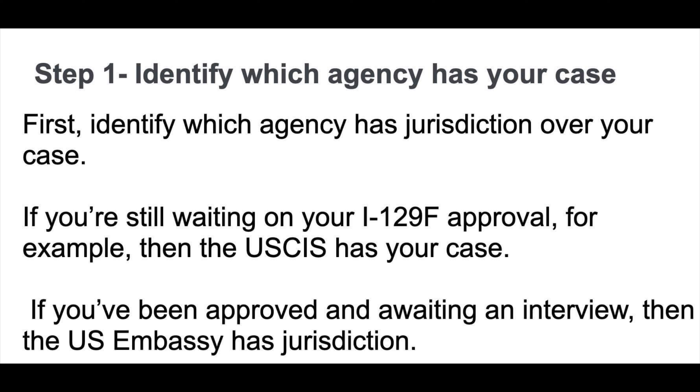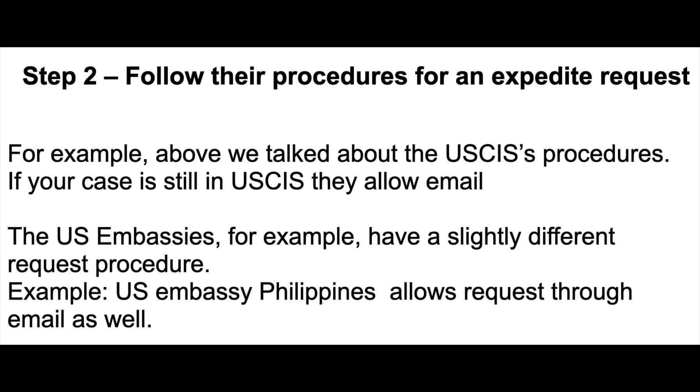Step one: identify which agency has your case — is it at the USCIS, the NVC stage, or at the embassy where you want to have your interview? If you are still waiting for your I-129F approval, then the USCIS has your case. If you have been approved and are awaiting an interview, then the US embassy has jurisdiction. Step two: follow the procedure for an expedite request for each stage. For example, USCIS allows email, and so does the US embassy in the Philippines.